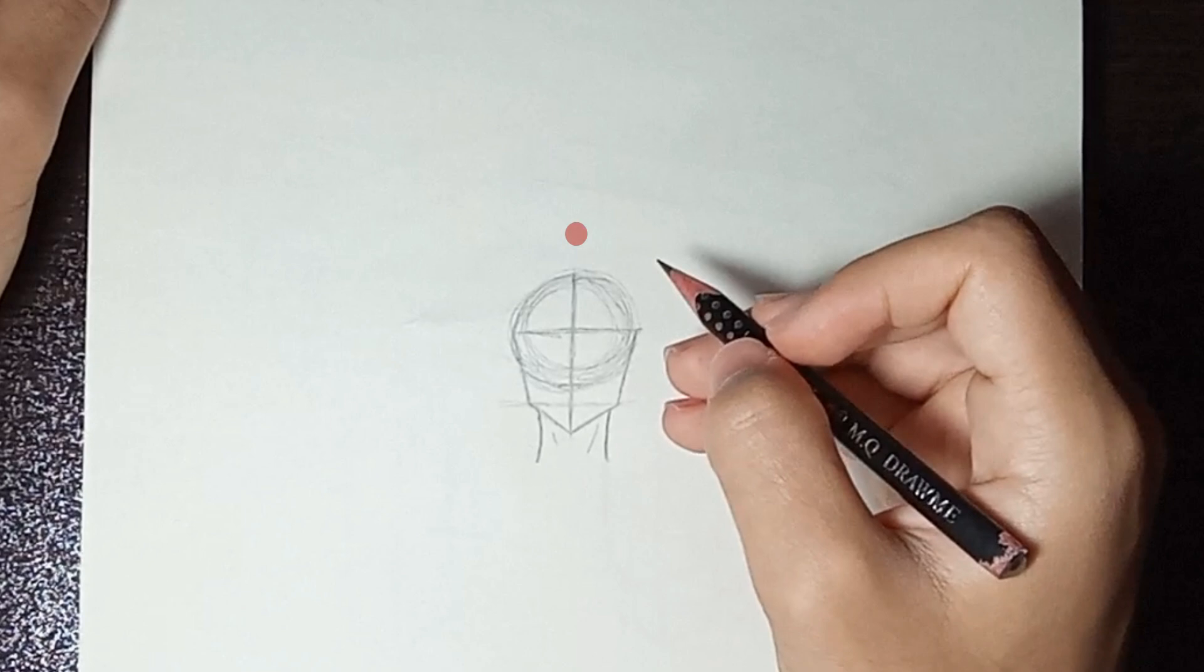For example, in this photo, the top of the hair is here. Once we have the top point, we should draw all the hairlines starting from this point like this.